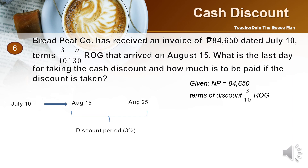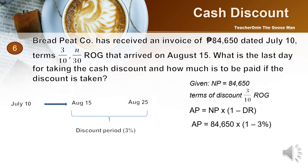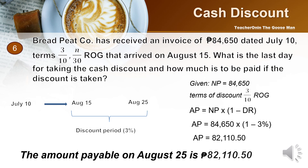The given: net price is 84,650, and the terms of discount are 3/10 ROG. Using the formula, amount payable equals net price times (1 minus discount rate): 84,650 times (1 minus 3%). Using the calculator, the amount payable equals 82,110.50. Therefore, the amount payable on August 25 is 82,110.50.